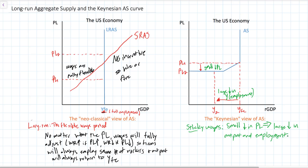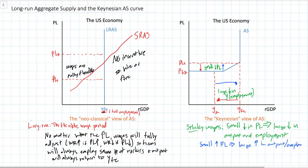What does the Keynesian model predict will happen if prices start to rise again and an economy starts to recover with increases in aggregate demand? If there were a recovery, there could be an increase in the price level that is not very high, which would correspond with a relatively large increase in the level of output and employment. So when prices rise, very little inflation would lead to a large increase in output and employment.